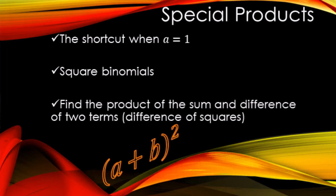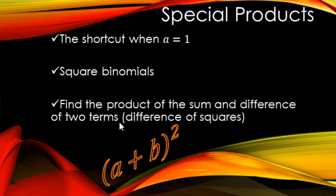In this video, we are going to be looking at special products of binomials. We're going to be looking for the shortcut for when a equals 1. We'll be looking at squaring binomials and then finally finding the product of the sum and difference of two terms. This pattern is also called difference of squares.